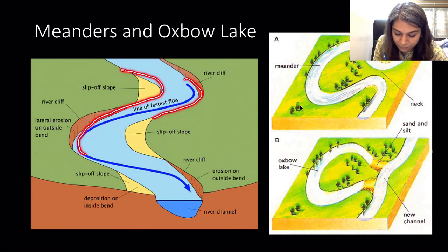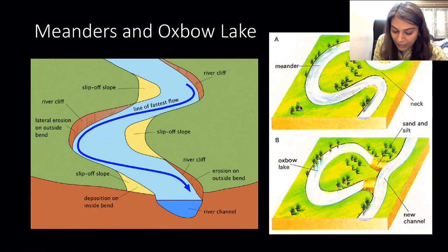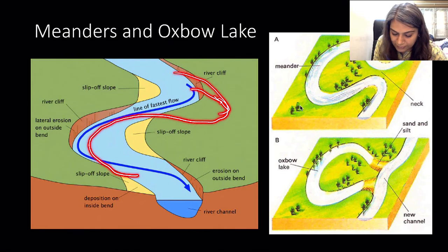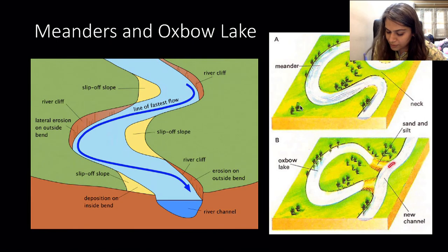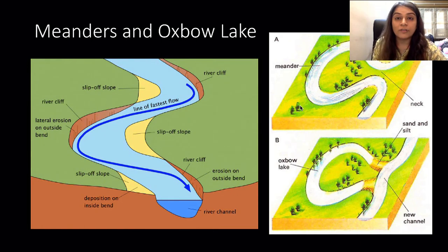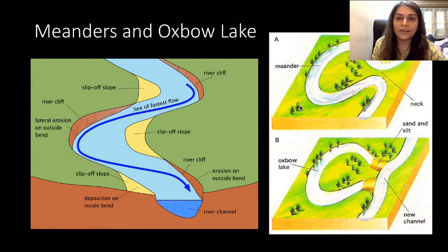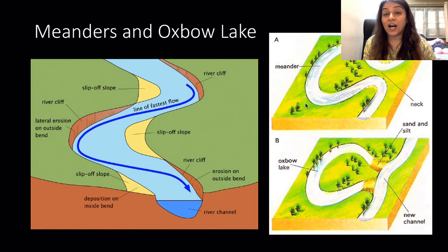Sometimes the meander keeps moving until the two ends meet, and the river finds an easier straight path to flow. The loop gets cut off from the main river, forming a lake called an oxbow lake. Kanwar Lake in Bihar is an example of an oxbow lake.